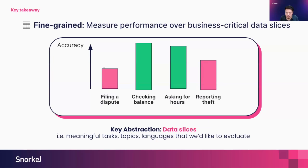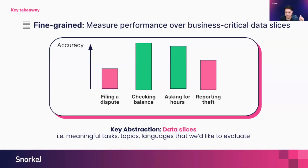It's really important to measure fine-grained performance. The key abstraction is the notion of a data slice. These models are being asked to perform a number of different tasks, and tracking performance when users are filing a dispute versus checking a balance versus reporting theft or fraud can be very important for understanding business-critical performance. With coarse-grained metrics, you might get a high-level accuracy or BLEU or ROUGE score, but it doesn't tell you what your business-critical functions are that you need to shore up before shipping to production.